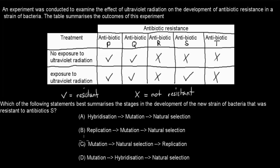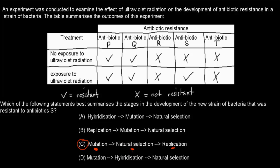Welcome back. The correct answer is C. For antibiotic resistance to develop, first there has to be a mutation. The mutation allows the bacterium to survive, so it has been selected by nature. After it survived, it was able to replicate. So the order is: mutation, then natural selection, then replication. C is correct and all other options are false.